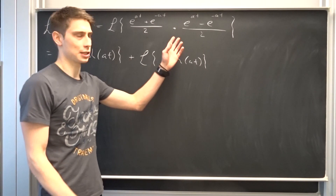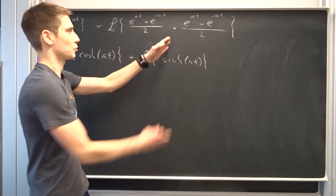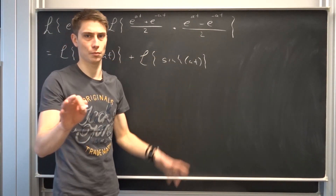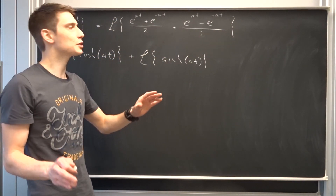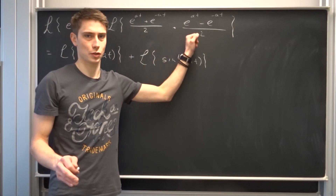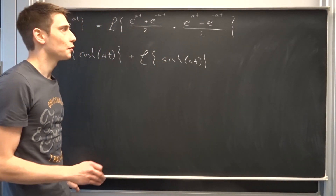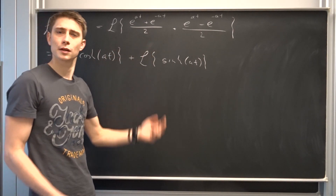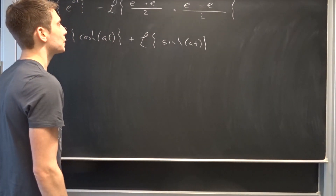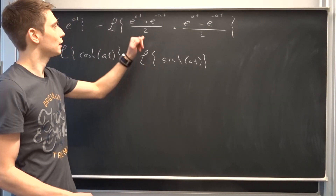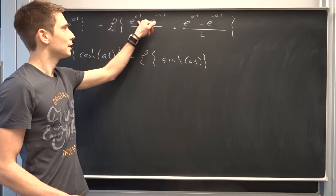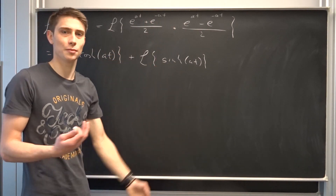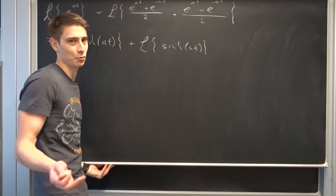We can also use linearity on this part, so we can split it up into the Laplace transform of each term. We are going to calculate both Laplace transforms, starting with the hyperbolic cosine. This is quite easy because we already calculated the Laplace transforms of e^(at) and e^(-at), so we can just plug all the information in.